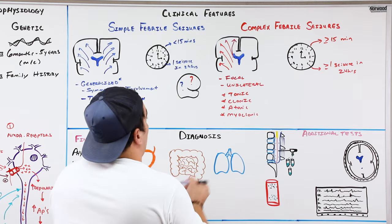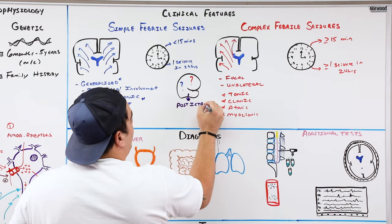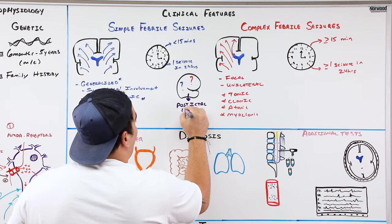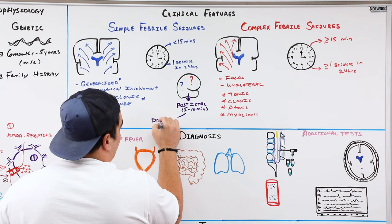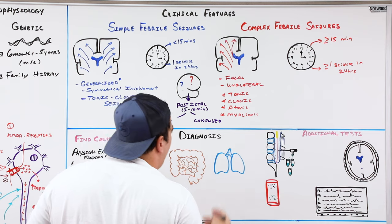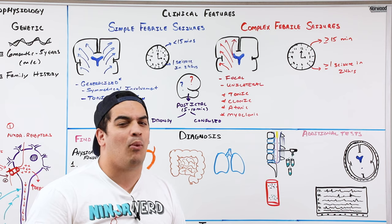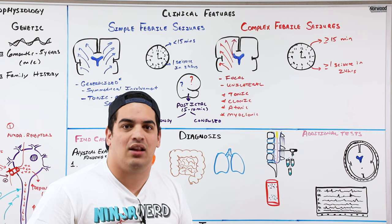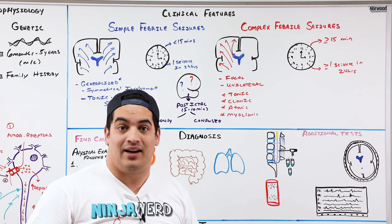Both simple and complex febrile seizures can be followed by a post-ictal state, usually lasting about five to ten minutes, characterized by drowsiness and mild confusion. If altered mental status persists beyond ten minutes, you should consider an alternative diagnosis.